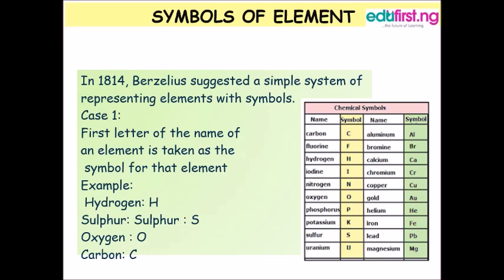Case 1: The first letter of the name of an element is taken as the symbol for that element. Examples include hydrogen represented with H, sulfur represented with S, oxygen with O, and carbon with C.